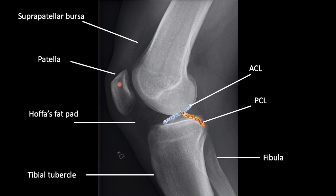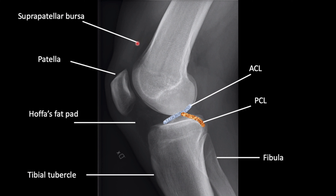On a lateral knee radiograph you see the patella, femur, tibia, and fibula. Superior to the patella there is a thin structure of soft tissue density sitting between two low-density structures. This dense structure is called the suprapatellar bursa. When there's a fracture or a knee effusion for any other reason, this is the first structure that gets swollen up. If this structure is more than five to ten millimeters, we call it a knee effusion. The dark structures are the pre-femoral fat pad and the suprapatellar fat pad. This is Hoffa's fat pad, the tibial tubercle, fibula, and you can see the ACL and PCL here as well.